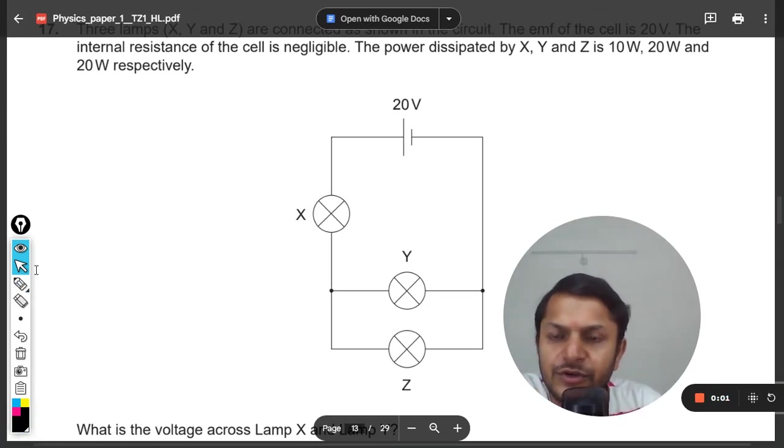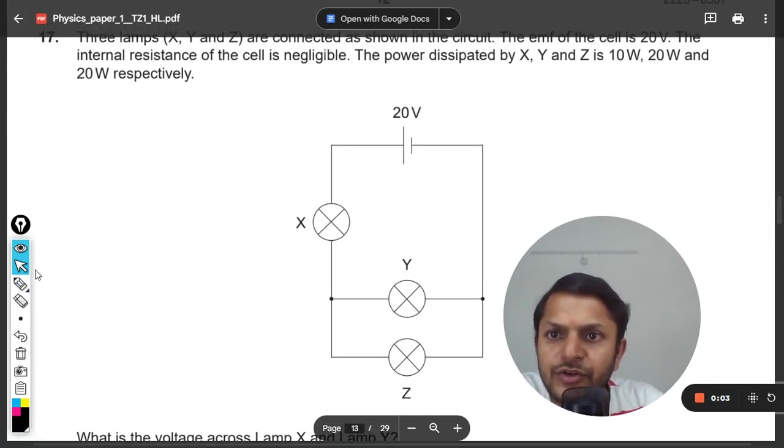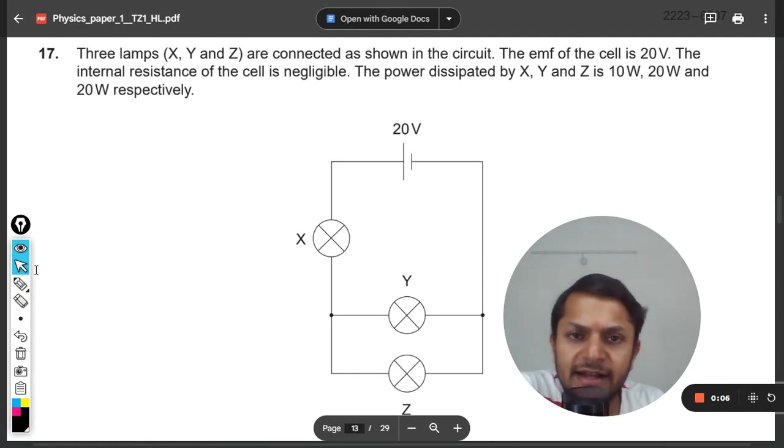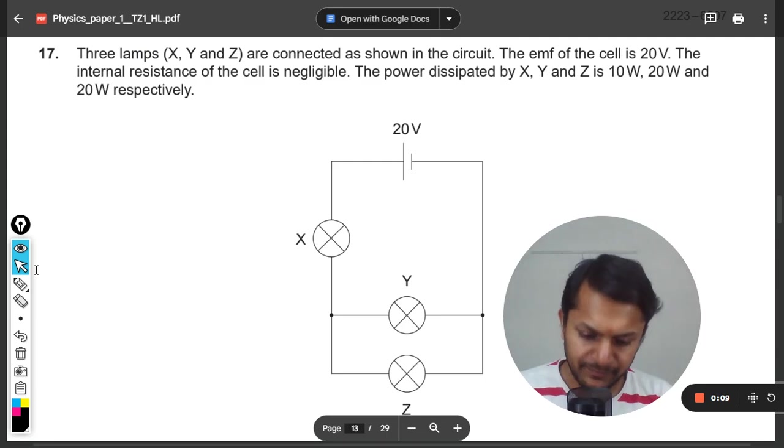Students, let us see what is there in this question. Three lamps X, Y, and Z are connected as shown in the circuit. The emf of the cell is 20 volts and the internal resistance of the cell is negligible. The power dissipated in X, Y, and Z is given as 10 watts, 20 watts, and 20 watts respectively.